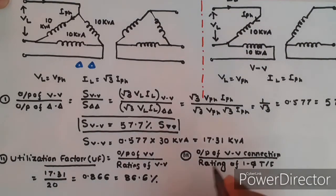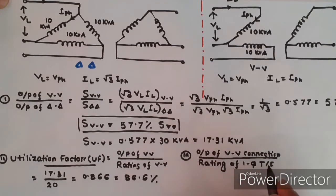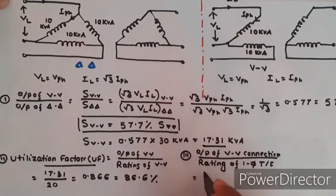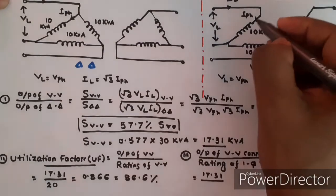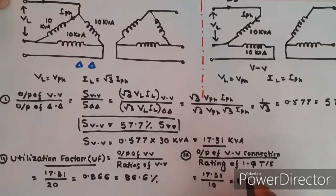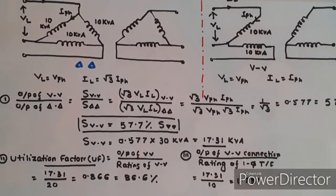Another important ratio: output of V-V connection divided by the rating of a single transformer. The output of the V-V connection is 17.31 kVA, and the rating of a single transformer is 10 kVA. Therefore, this ratio becomes 1.731.